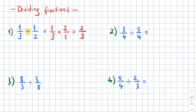Question two: we have three over four divided by five over four. Let's change the operation from division into multiplication. The first fraction stays the same — three over four — then we flip the second fraction. Five over four becomes four over five.